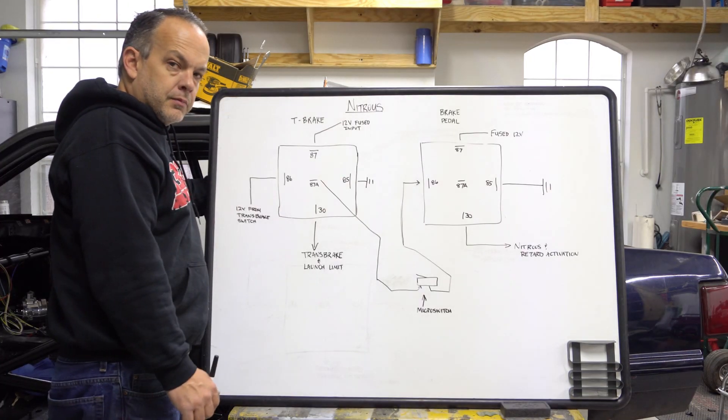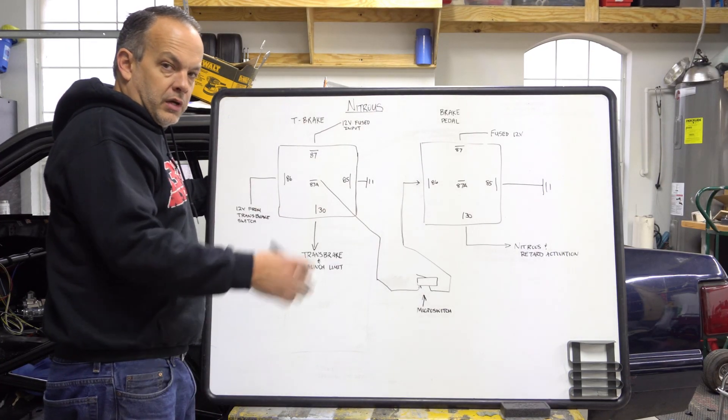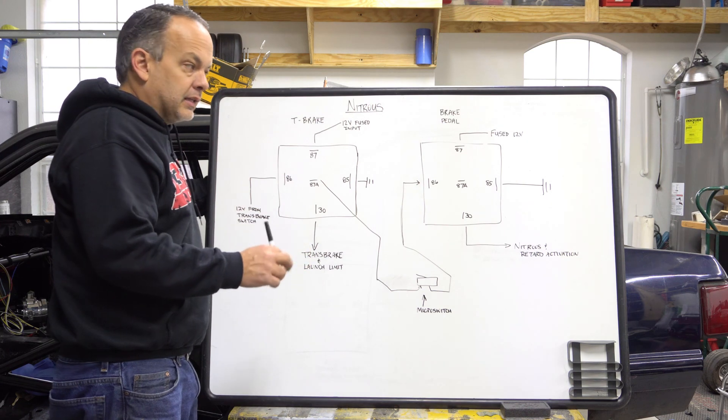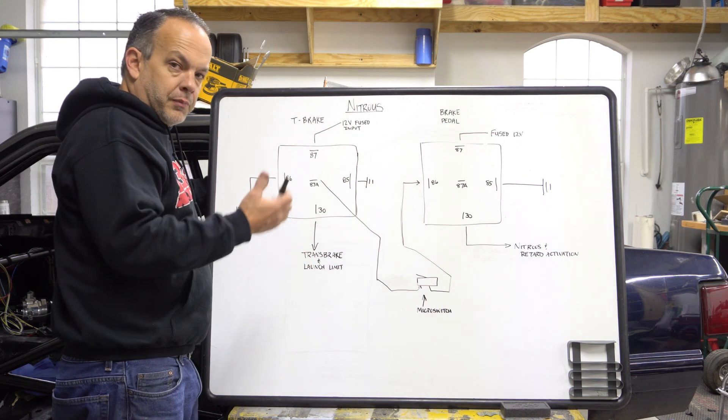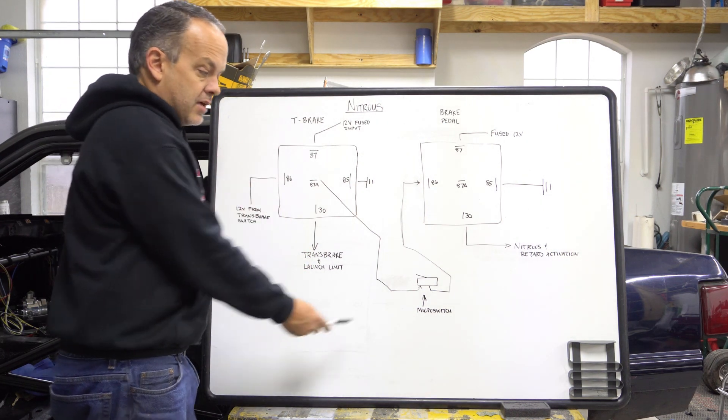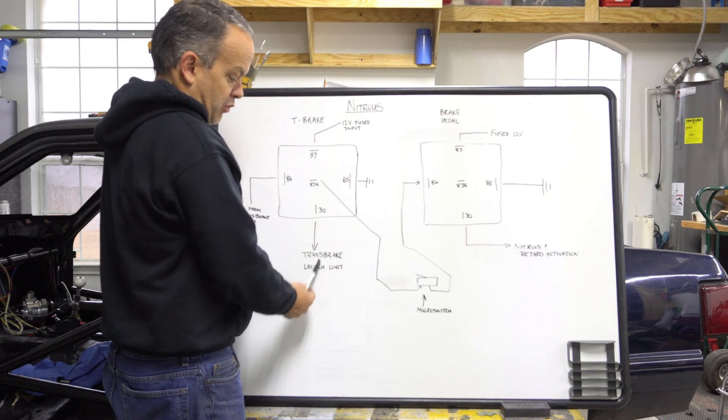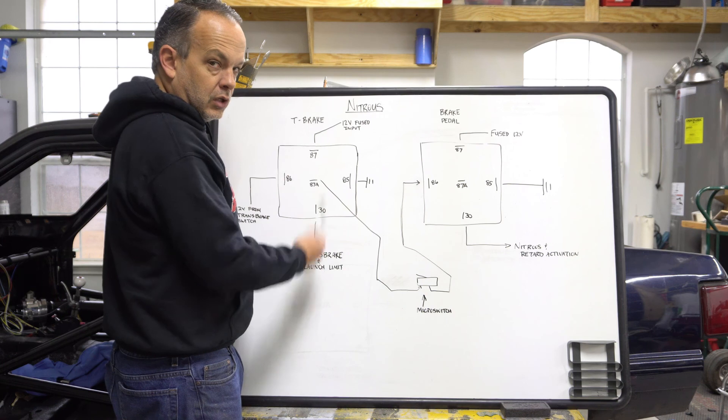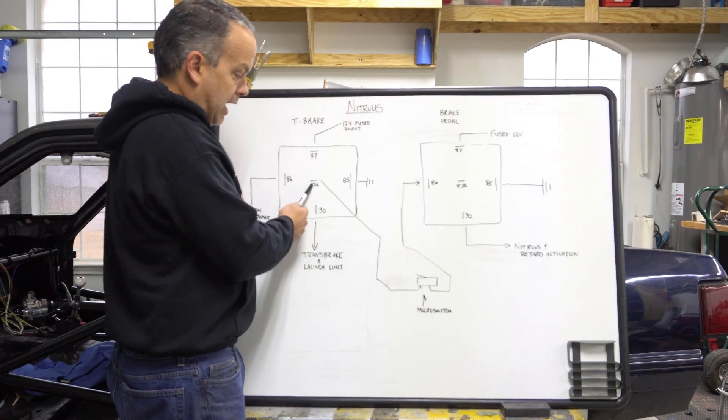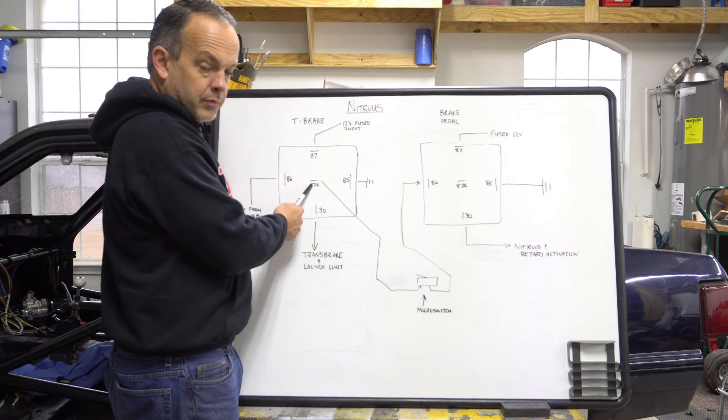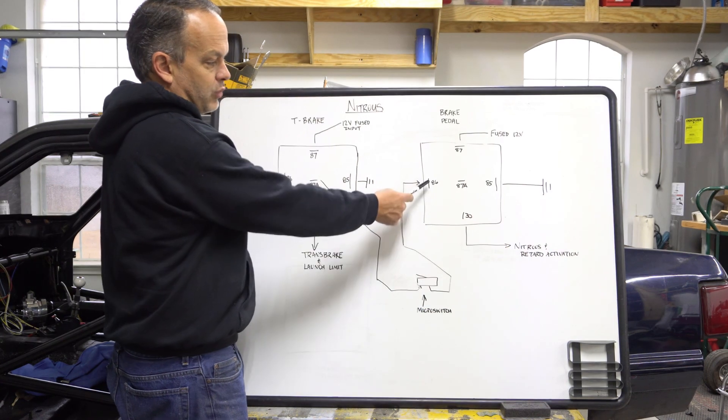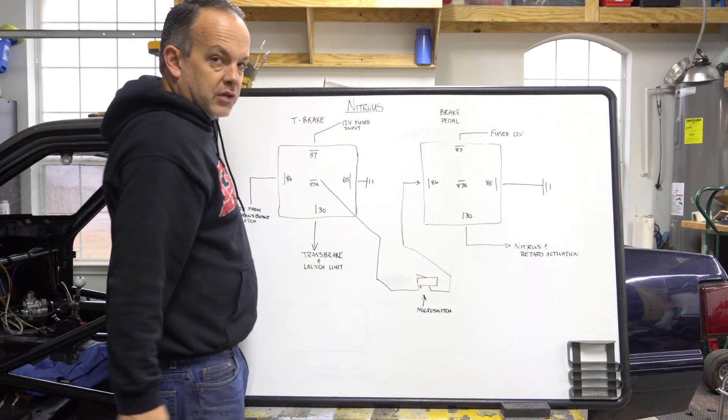So when the car pulls up to the line, there's no stalling it up. There's no building boost or anything like that. The nitrous guys pull up, they hit the transbrake, they deck the gas, the microswitch closes. Transbrake comes on. You let go of the transbrake, 87A picks the power up, sends it through the microswitch, turns this relay on, and the nitrous comes on.